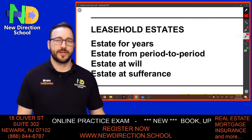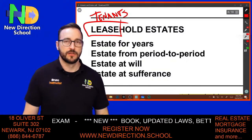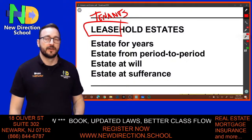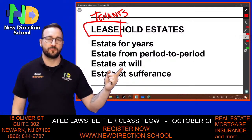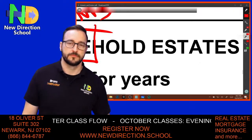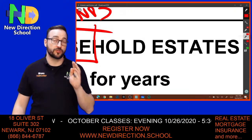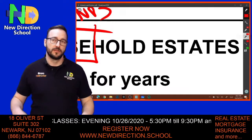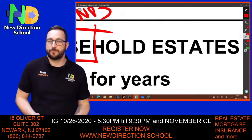Leasehold estates involve renters — commonly known as tenants — for a short or definite period of time. There are different types of leasehold estates: estate for years, estate from period to period, estate at will, and estate at sufferance.